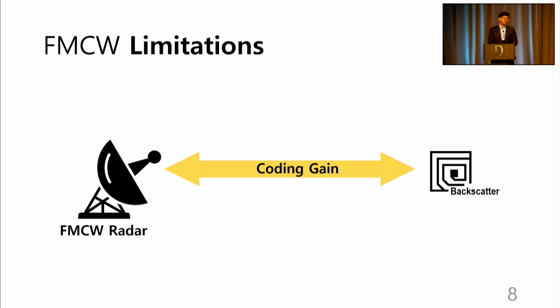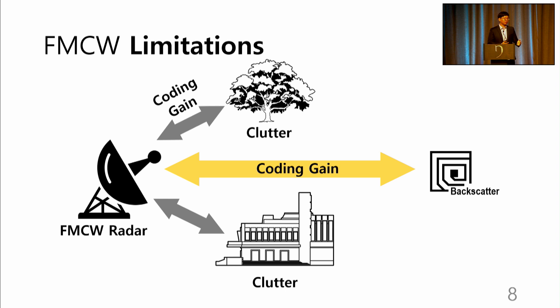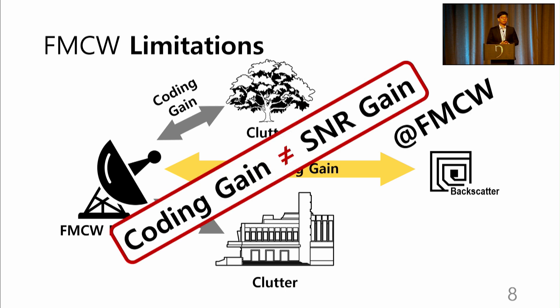The problem is, FMCW coding gain applies to all received signals. This includes the clutter noise along with the tag signal. As a result, there is no practical SNR gain in using the FMCW radar. So our challenge is to isolate the tag signal to translate the FMCW gain to the SNR gain.